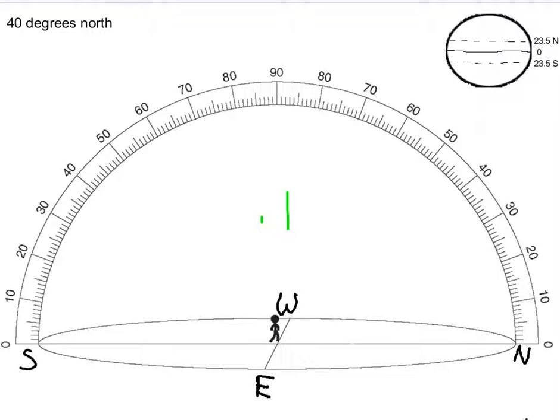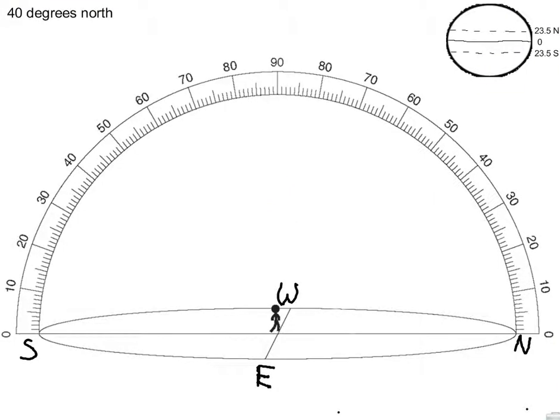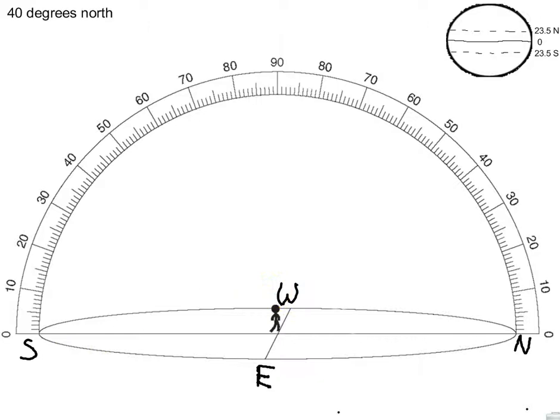In this screencast, we're going to practice drawing the sun's path on a celestial sphere. Depending on where the observer is located, the sun's path will change throughout the year. We will start with an observer located at 40 degrees north latitude. Here is my celestial sphere with all compass directions already labeled, and an illustration of Earth with the three major lines of latitude to help draw the sun's path.